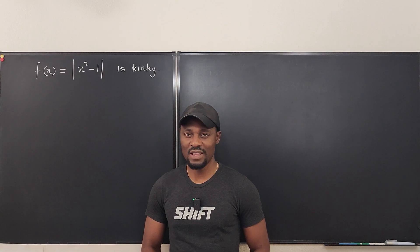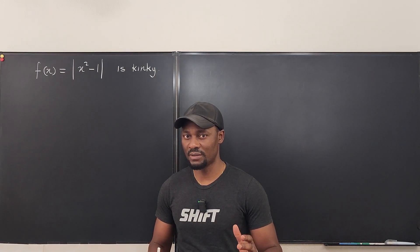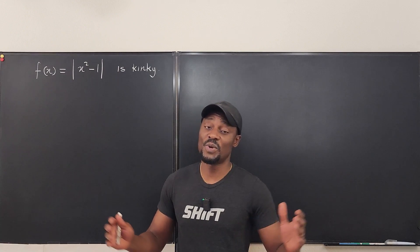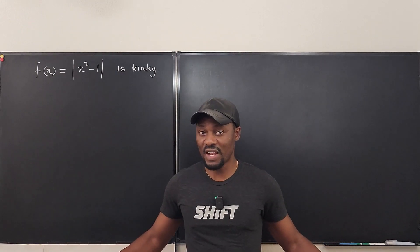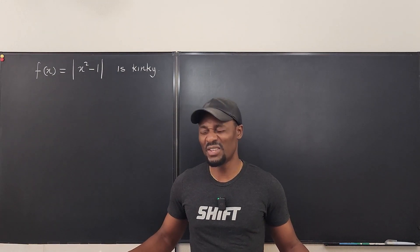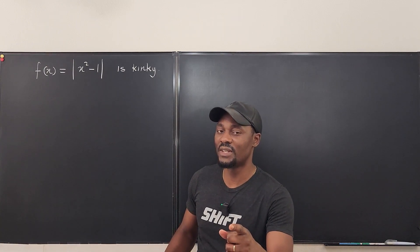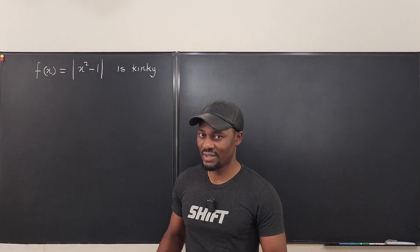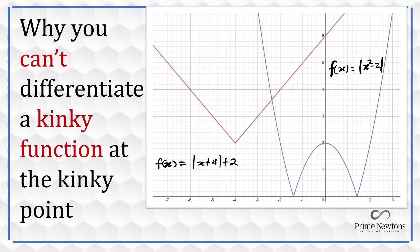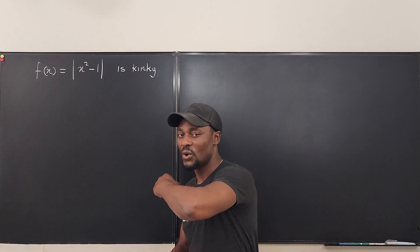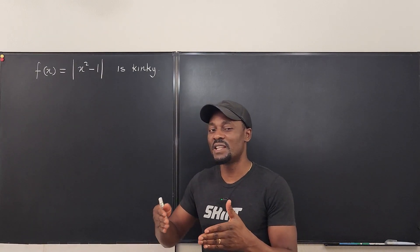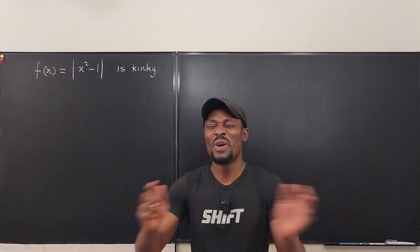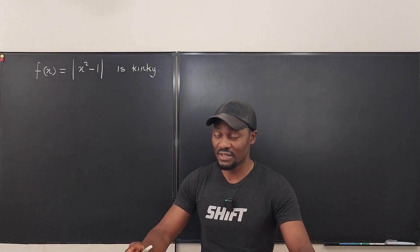Welcome to another video. Have you ever heard the word 'kink' or 'cusp'? It has to do with the behavior of certain functions. All absolute value functions have a kink or a cusp. If you notice the thumbnail for this video, there was a kink and a cusp — because there's an elbow, a sharp corner, or the meeting of a curve and a straight line, two straight lines, or two curves.